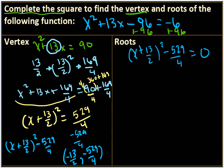So here's our original problem: x plus 13 over 2 squared minus 529 over 4 equals 0.